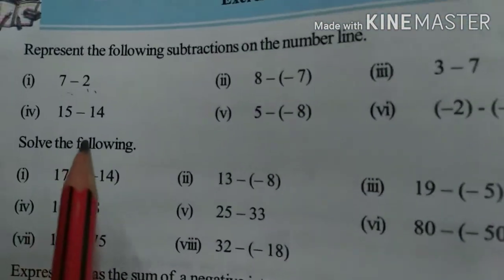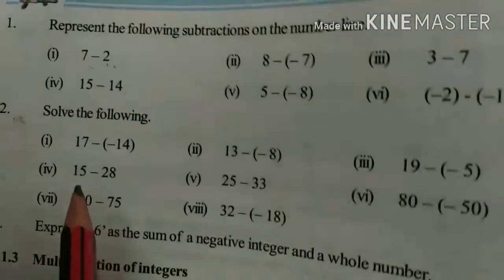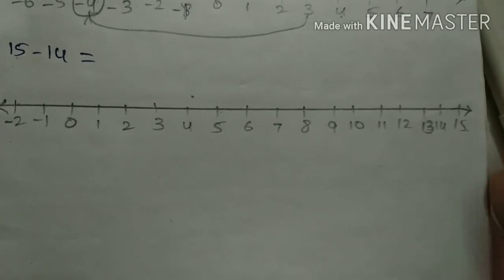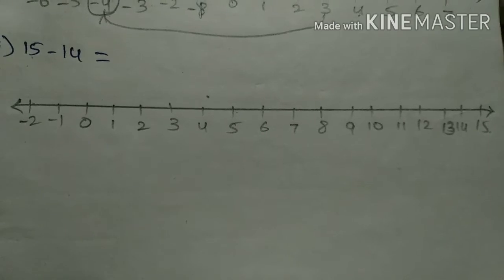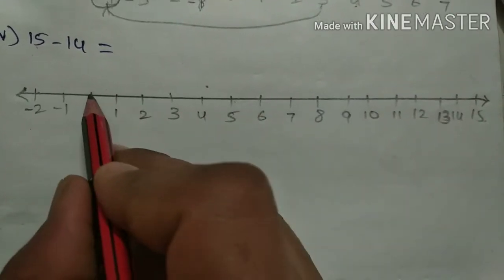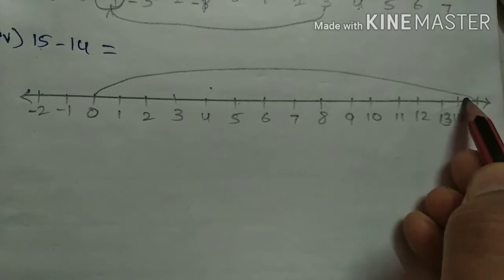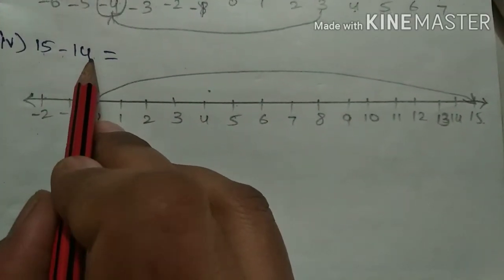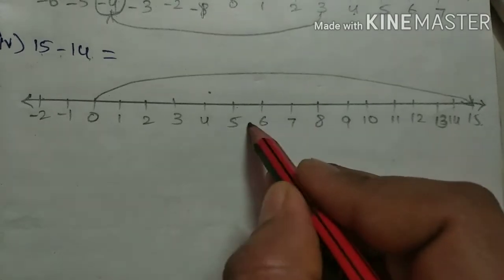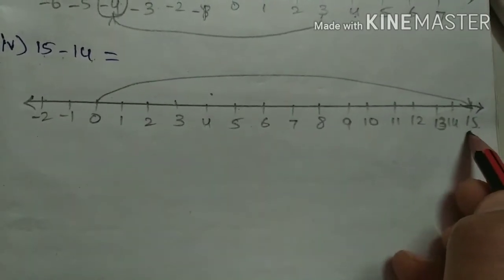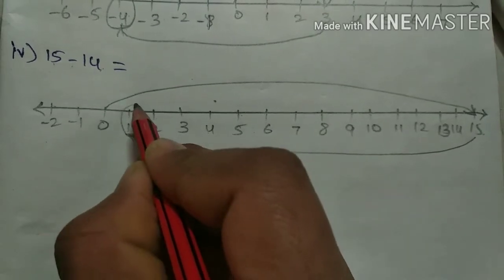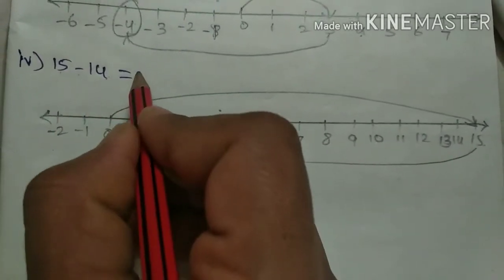Let us go to the next one: 15 minus 14. See here — first number is 15, so up to 15 on the number line. If you have space on the right side you can write 16, 17 — your wish. For me, up to 15 is enough. First, move from 0 to 15 like this. Afterwards, we are subtracting a positive integer 14. So move to the left side: 1, 2, 3, 4, 5, 6, 7, 8, 9, 10, 11, 12, 13, 14. So up to 1. Circle the answer — what is the answer? 1. So 15 minus 14 is 1 only.